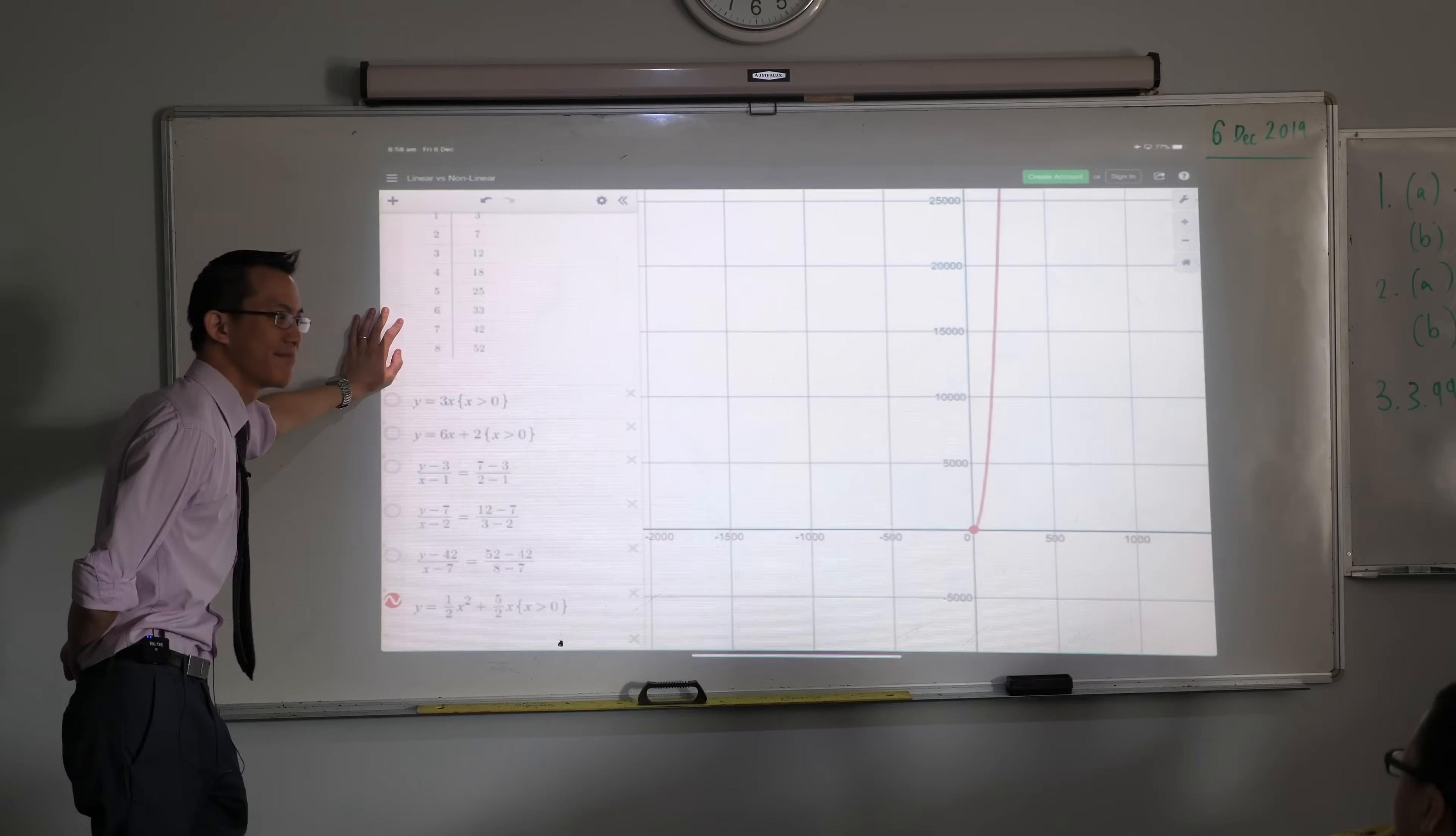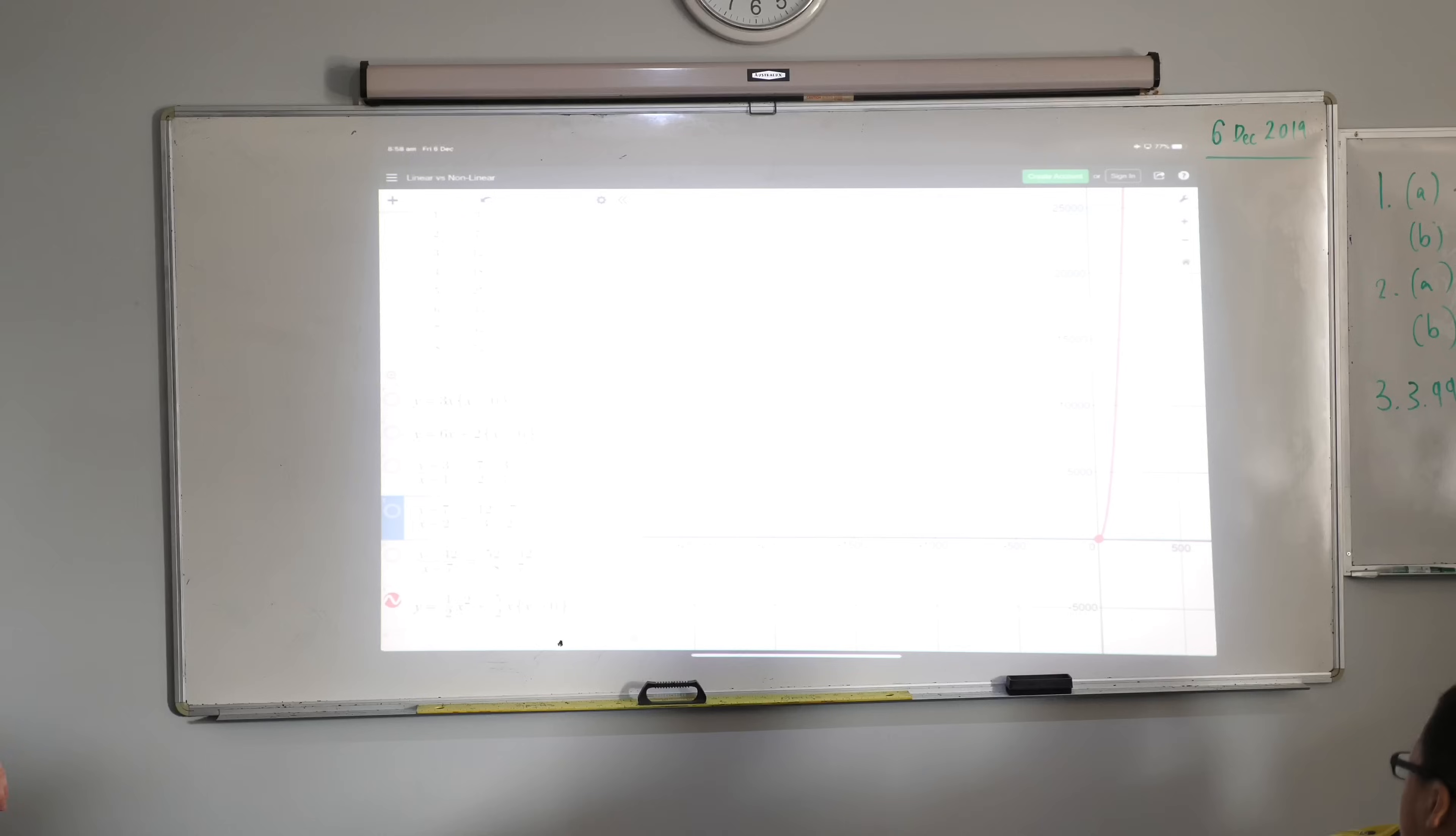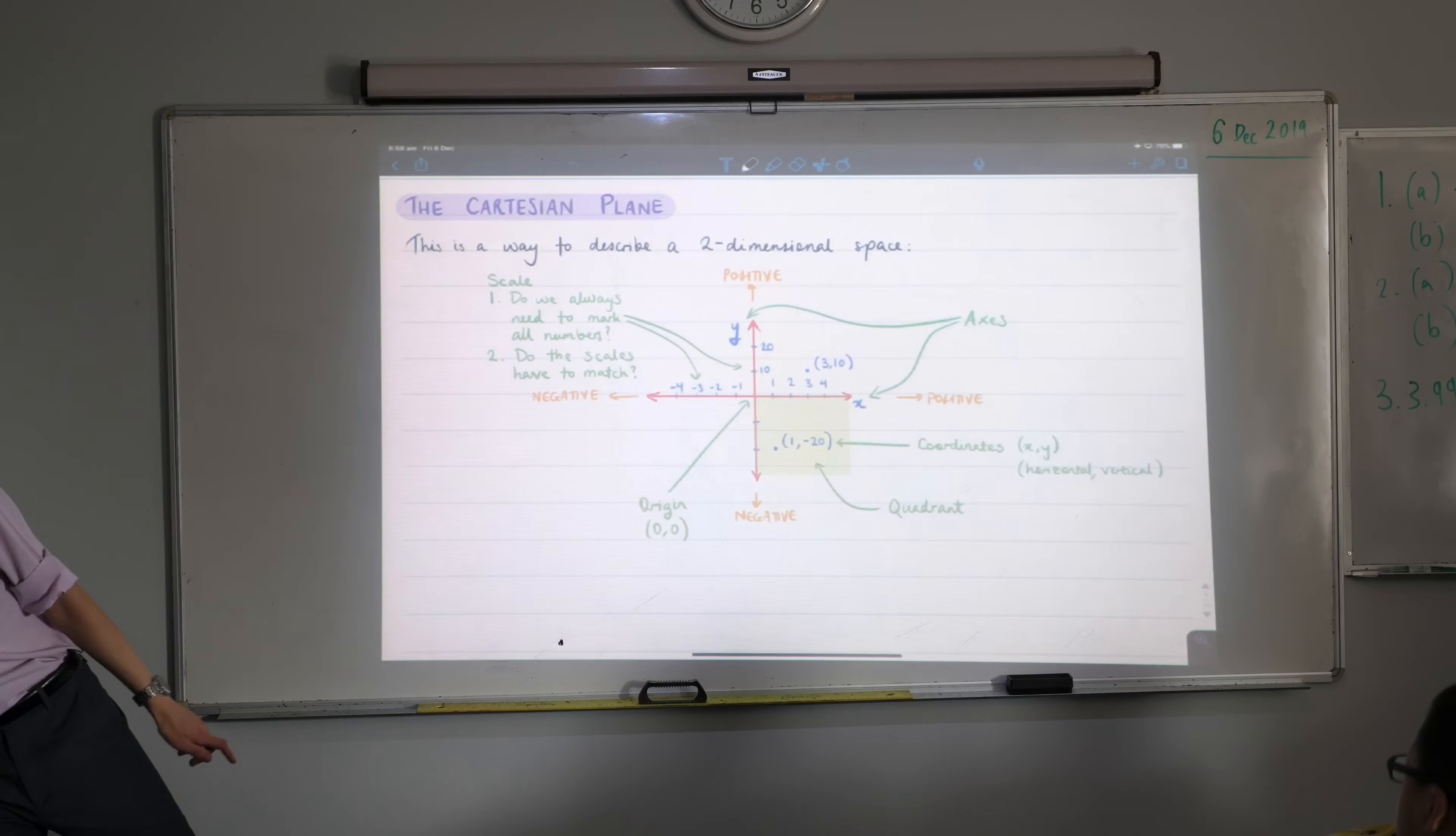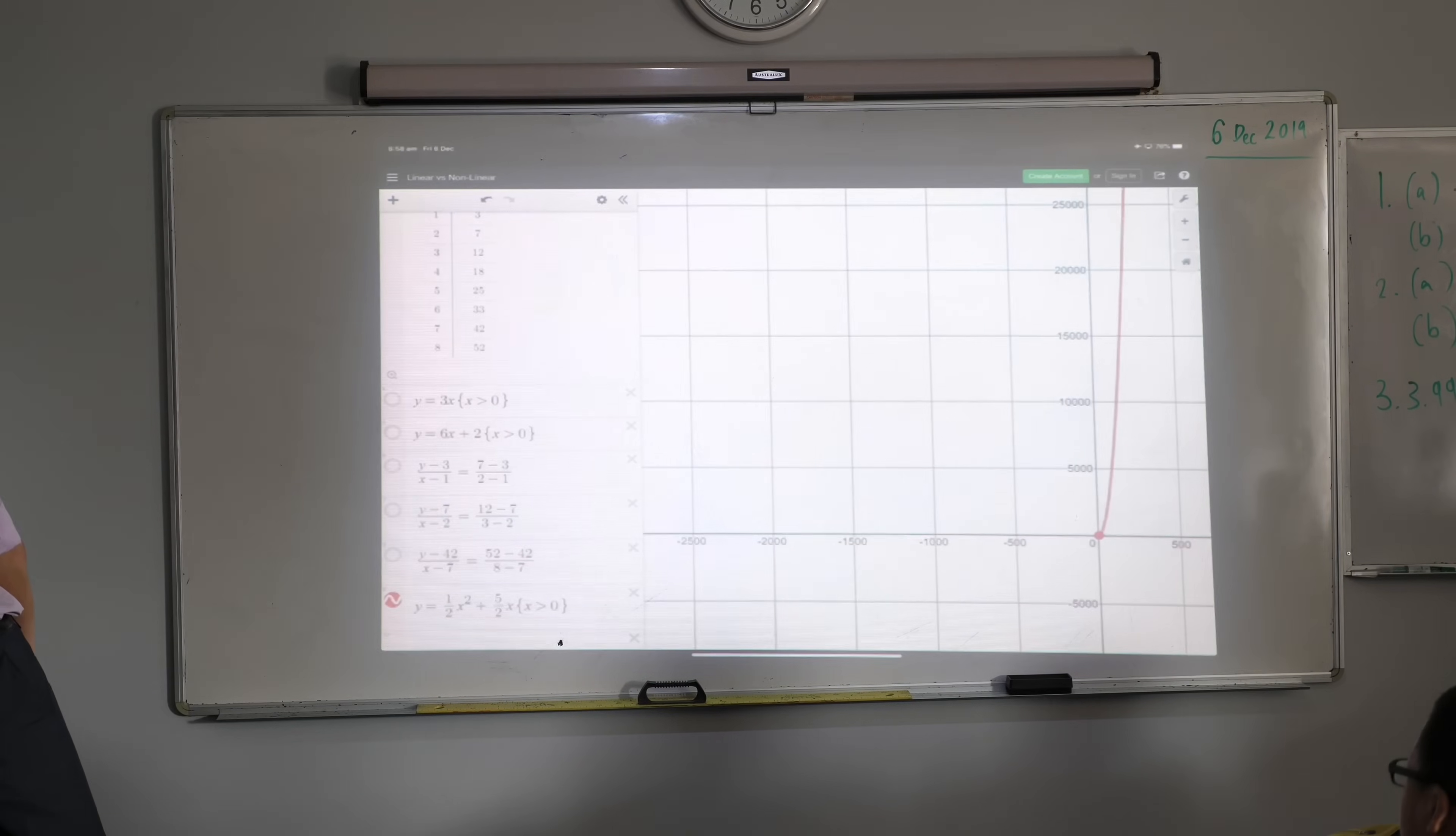Do they get steeper forever because the axes have unlimited length? Yeah, so if you go back to, do they get steeper forever because the axes have unlimited length? If you go back to where you did this, do you remember this? When we were talking about the Cartesian plane, right? And what do we put on the ends of the Cartesian plane? We put arrows, which you told me indicates that they go on forever. Right, exactly. Vishakha.